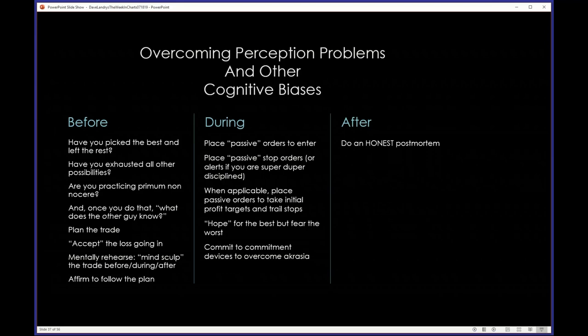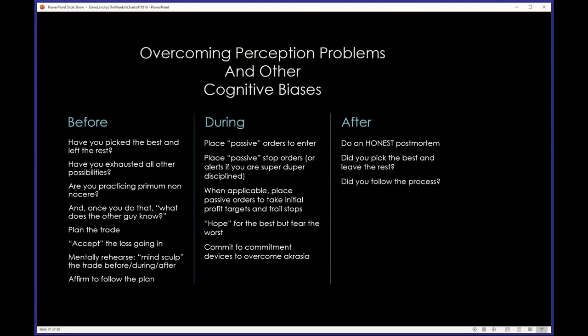You have to do an honest post-mortem when you're done with the trade. Go back to day one, back your chart out, and ask yourself: is this the greatest looking setup in Setup Town? If the answer is yes, even if you lost money, you did the right thing. Make sure in that post-mortem you pick the best and leave the rest. Try to forget about what happened in the news and ask yourself: would I take that setup if I were just seeing it today? The two biggest questions: did you pick the best and leave the rest? And did you follow the process? If you do both, you're going to be fine longer term.